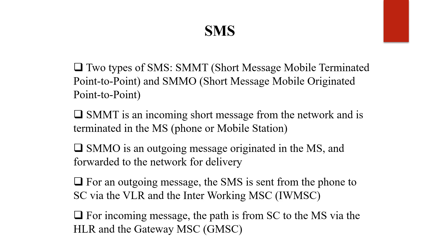Incoming messages arriving at the mobile station are handled by SMMT. From the mobile station onwards, the system is managed by SMMO — Short Message Mobile Originated. The outgoing message is sent from the mobile device to the service center via the VLR (Visitor Location Register), which identifies the current location. So for outgoing messages, the SMS is sent from the phone to the SC via the VLR and the Interworking MSC.